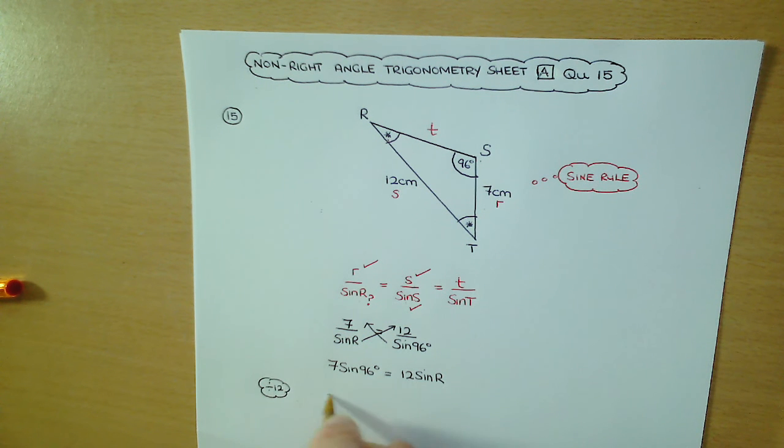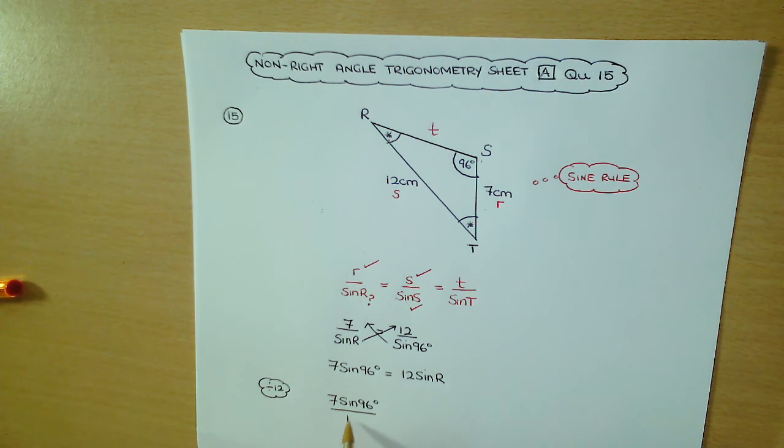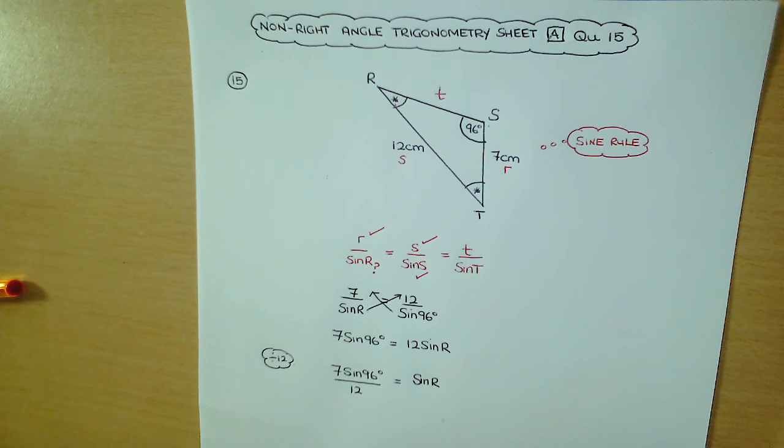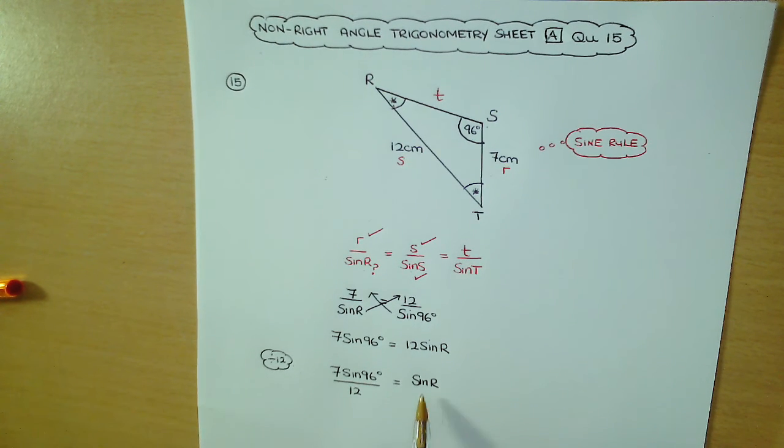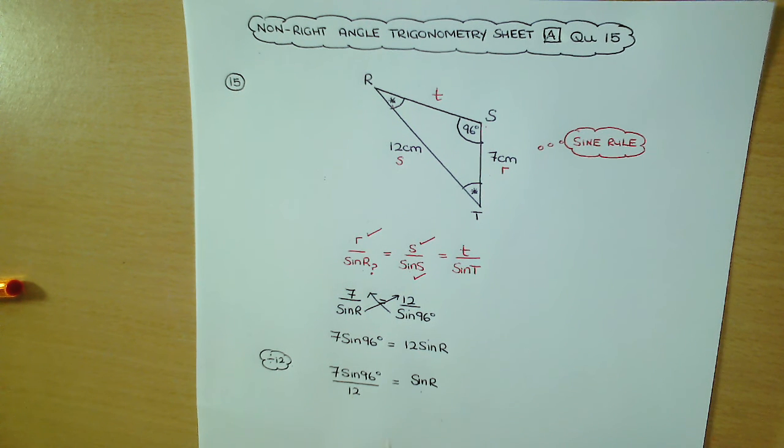So we have 7 sine 96 over 12, and that's just equal to sine R. The 12 here will cancel when we divide by 12. Now we know what sine R is equal to. Now we want to get R. Remember, R is an angle. In order to get an angle, we take the inverse trig function of the other side. So the trig function here is sine, so to get rid of sine, we're going to take the inverse sine of the other side.